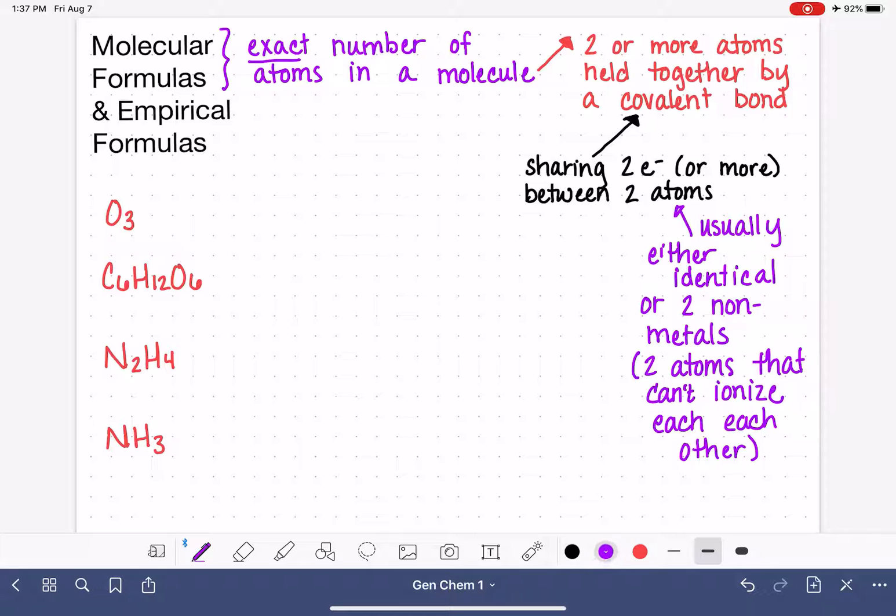Let's talk now about empirical formulas. Empirical formulas gives the ratio, or it is the ratio of atoms. And an empirical formula can be applied to either a molecule or an ionic compound. So the empirical formula is not an exact number, but rather it's a ratio. And we have practice, even though we haven't called it this, we have practiced writing empirical formulas for ionic compounds.